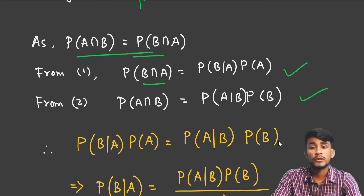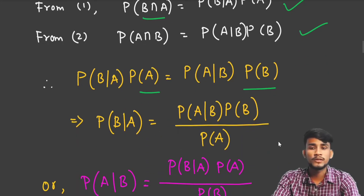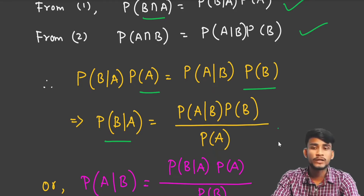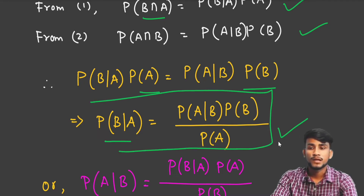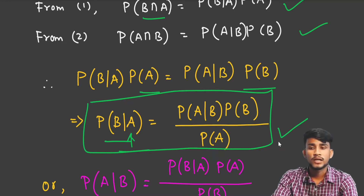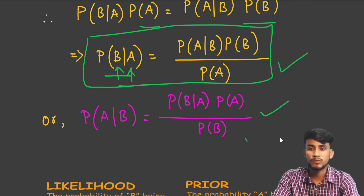Since these two are equal, equating them we get P(B|A) · P(A) = P(A|B) · P(B). Therefore we can write P(B|A) = P(A|B) · P(B) / P(A). This is the probability formula for any two events A and B, where either one has already occurred and you have to find the probability of the other. Alternatively, P(A|B) = P(B|A) · P(A) / P(B).